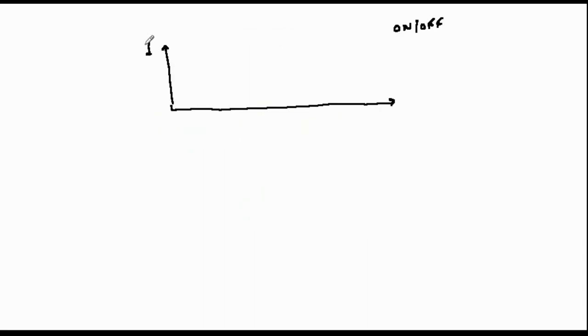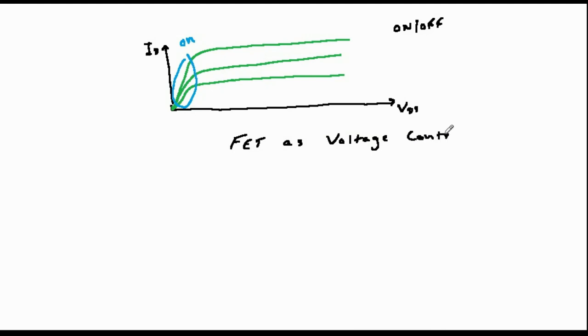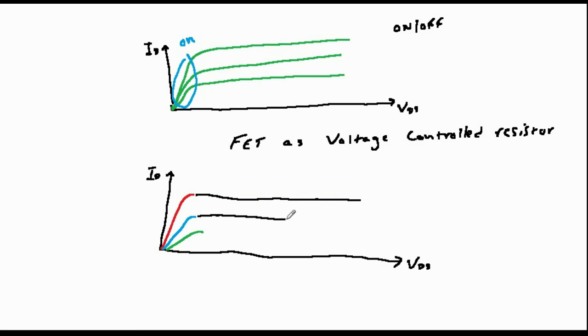When the FET is operating in this mode, it is switching completely on or off. In a similar and related way, an FET operating at low values of VDS, an area which is called the ohmic region of its characteristic, can act like a voltage controlled resistor. This is shown on the screen.